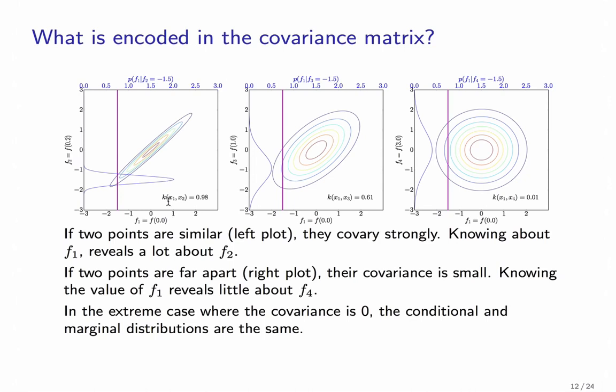On the left, we see that if we have two points that are close to each other, such as 0 and 0.2, then knowing something about the function value for 0 reveals a lot about the function value of 0.2. So they covary very, very strongly. On the other hand, when the covariance is very small, then knowing something about f1 does not reveal very much about f4, which makes sense since 0 and 3 are actually quite far apart.